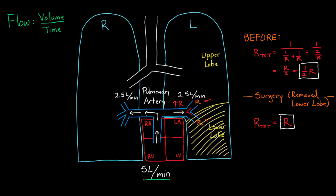Because of increased resistance on the left side, more blood flows to the right. I'll give new estimated numbers: three liters per minute to the right lung and two liters per minute to the left — they still add up to five liters total. Now let me introduce the word perfusion. People sometimes use flow and perfusion synonymously, but they're different.